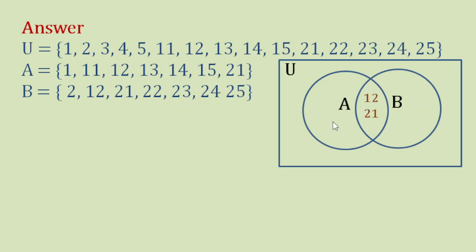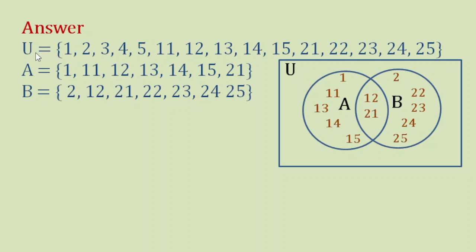We place the common elements 12 and 21 in the intersection region. For set A, we already have 12 and 21, so we add 1, 11, 13, 14, and 15. For set B, we already have 12 and 21, so we add 2, 22, 23, 24, and 25. The elements left out of both circles — 3, 4, and 5 — are placed outside the circles but still inside set U.